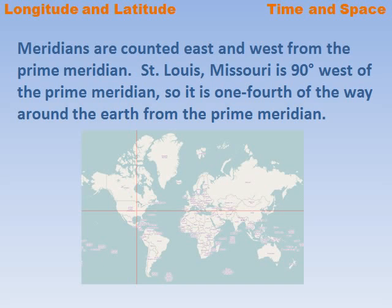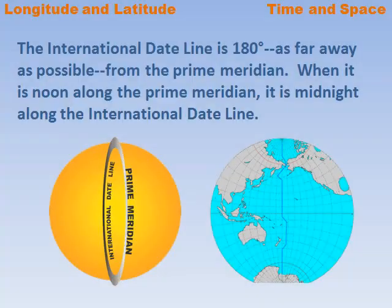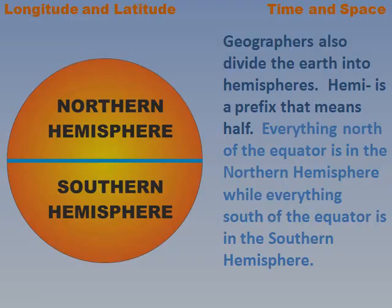Meridians are counted east and west from the Prime Meridian. St. Louis, Missouri is 90 degrees west of the Prime Meridian, so it is one-fourth of the way around the Earth from the Prime Meridian. The International Dateline is 180 degrees — as far away as possible from the Prime Meridian. When it is noon along the Prime Meridian, it is midnight along the International Dateline.